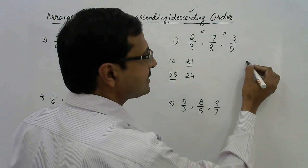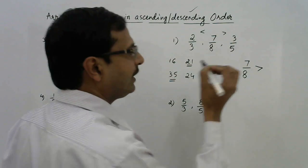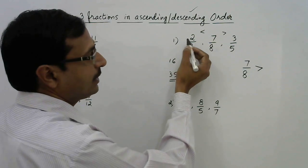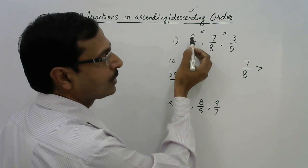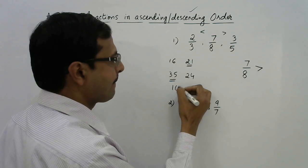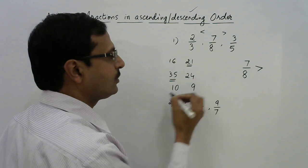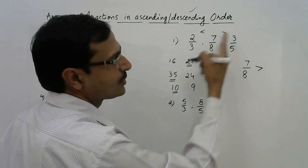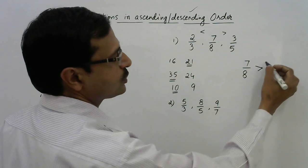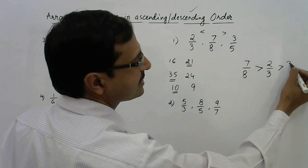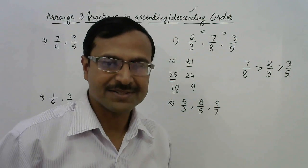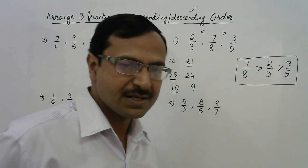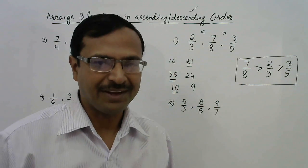Now for the second place, we make the final comparison between 2/3 and 3/5. Multiply: 2 × 5 = 10 and 3 × 3 = 9. Since 10 is greater, obtained from numerator 2, 2/3 is greater than 3/5. So the descending order is: 7/8 > 2/3 > 3/5. A very easy method — just practice with 30–40 questions for about 10–20 minutes.